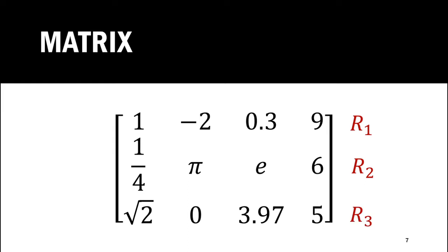It has four vertical arrays which we call as columns. The first column is denoted by C1, the second by C2, the third by C3, and the fourth by C4. In this way, this matrix has three rows and four columns.